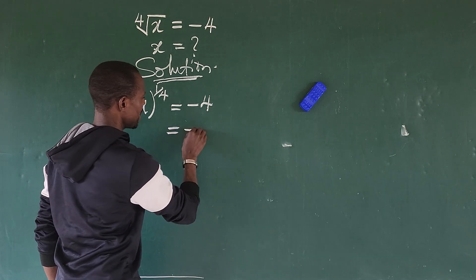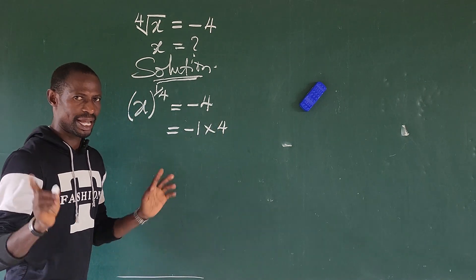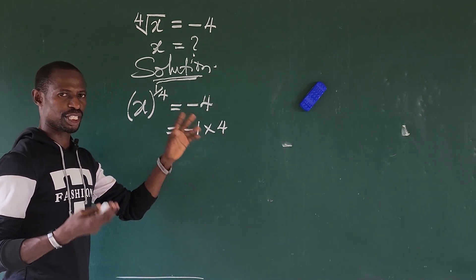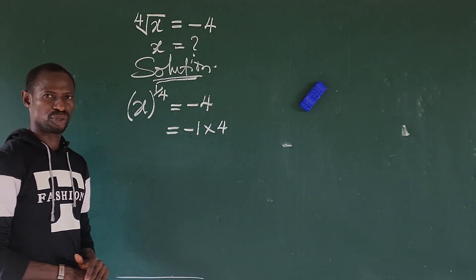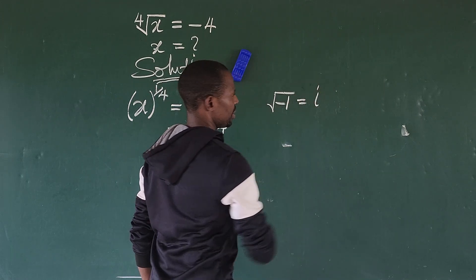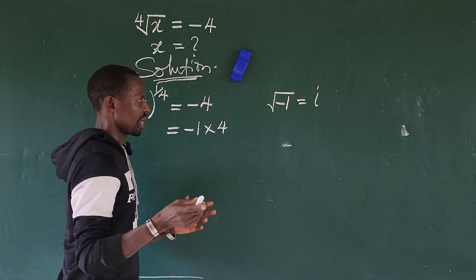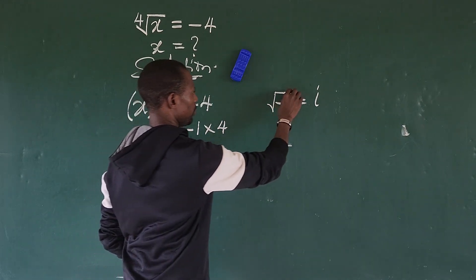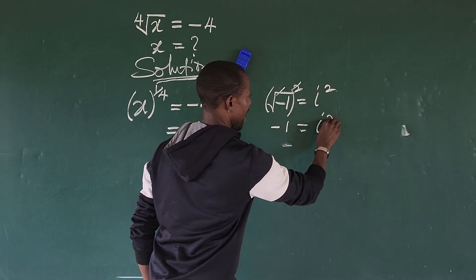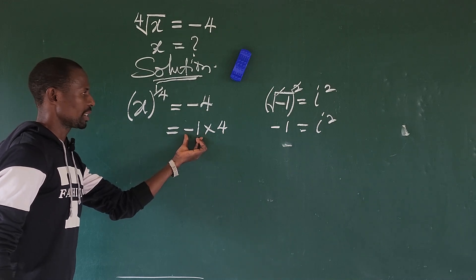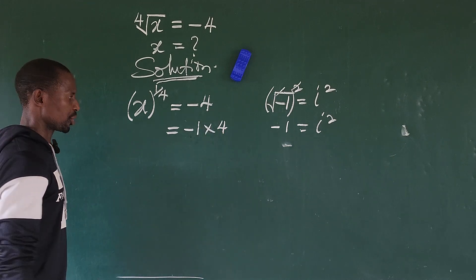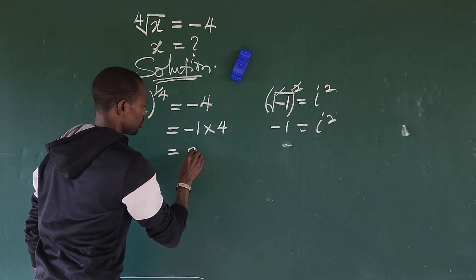We have to rewrite this expression. This expression could also be written as minus one times four separately. When we look at this four, it can be expressed as two to the power of two. Then, what is minus one? We know that the square root of minus one is equal to iota. So iota is an imaginary number, and if we square both sides, minus one equals iota squared. So we bring iota squared to take the place of minus one, and we write this as two to the power of two.